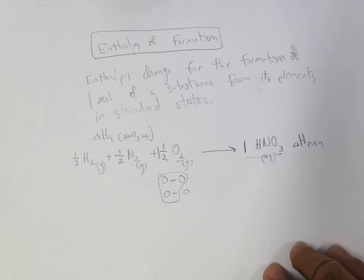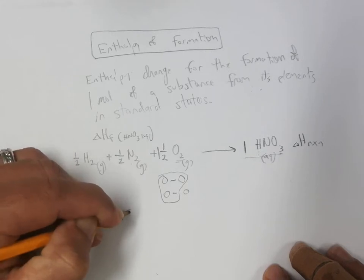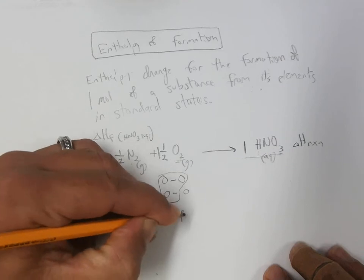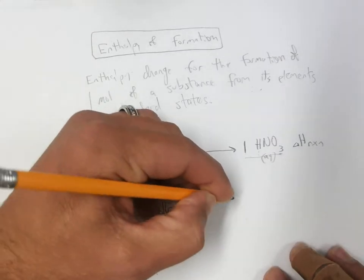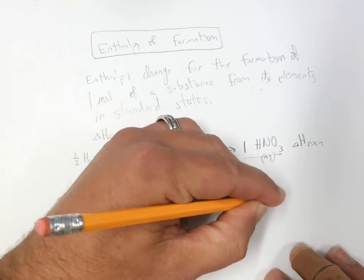So there we go, the simple definition. And where do we use this? The heat of a reaction is going to be the sum of the enthalpy of formation of the products minus the sum of the enthalpy of formation of the reactants.